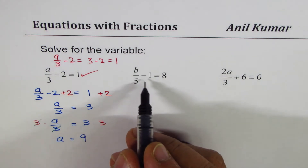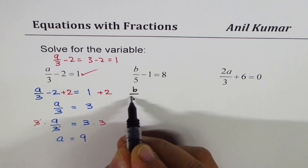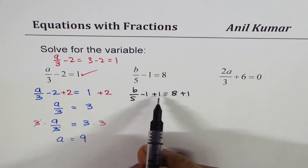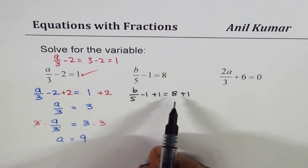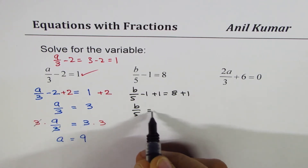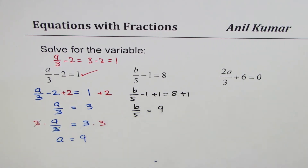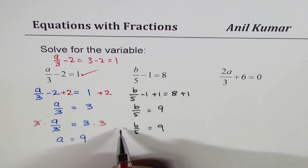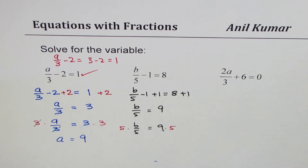We have b over 5 minus 1 equals to 8. We add 1 on both sides: b over 5 minus 1 plus 1 equals to 8 plus 1. Adding 1 on both sides does not change the equality — we are doing the same operations on both sides. So we are left with b over 5 equals to 9. Now we multiply by 5 on both sides. The 5's cancel and we get b equals to 45.